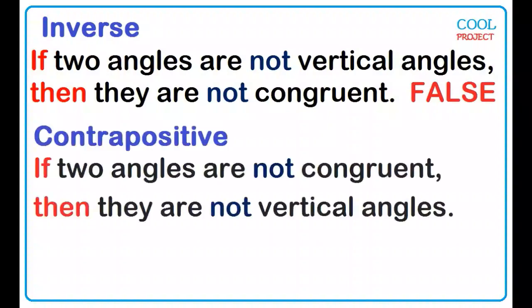Contrapositive: If two angles are not congruent, then they are not vertical angles. True or false? True.